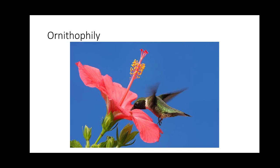Another agent is birds, which also collect nectar from plants. In the same manner as insect pollination, pollen gets dispersed onto the body of the bird, and when the bird touches a female flower, it deposits the pollen there. This method is called ornithophily, due to the use of birds in pollination.